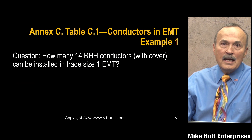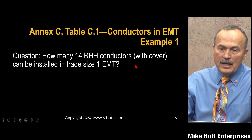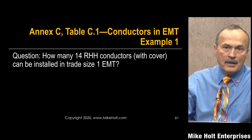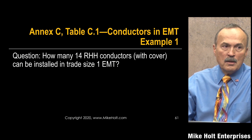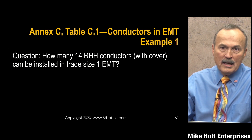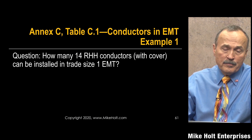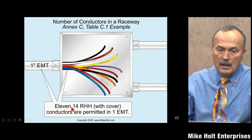Let's work an example with Annex C. This is Table C.1 - EMT with 14 AWG RHH with cover. That combination doesn't really make sense today - you won't find RHH conductors going into an EMT raceway with cover, that was old Romex - but it's a question so we answer it. Going to Annex C.1, RHH with cover, the answer is 11 conductors.